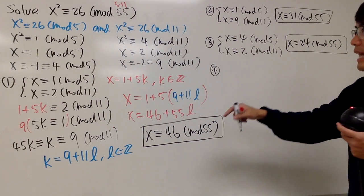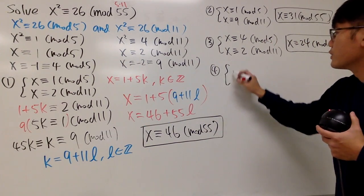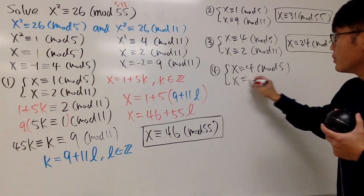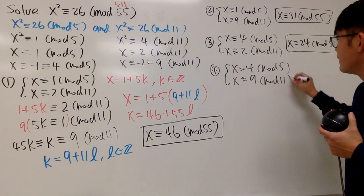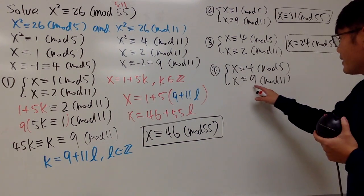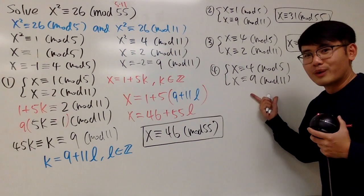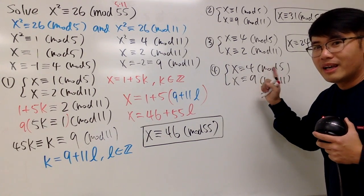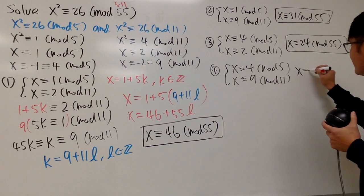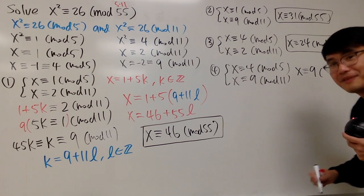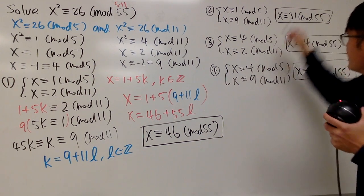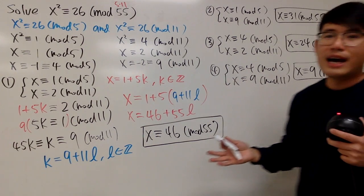And the last one: pair x congruent to 4 mod 5 with x congruent to 9 mod 11. Actually, 9 works right away — 9 divided by 5 gives remainder 4, so it satisfies both conditions nicely. The answer is x congruent to 9 mod 55. So we have all 4 answers: x congruent to 46, 31, 24, and 9, all mod 55.